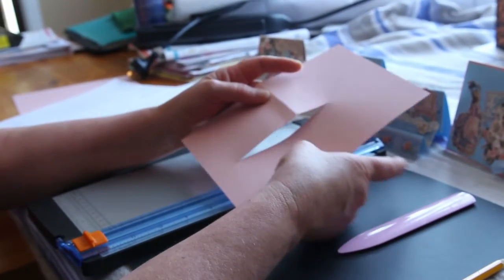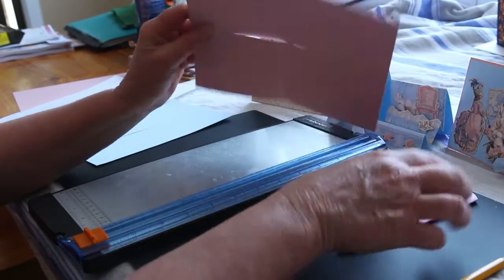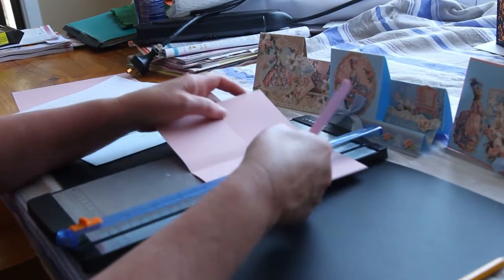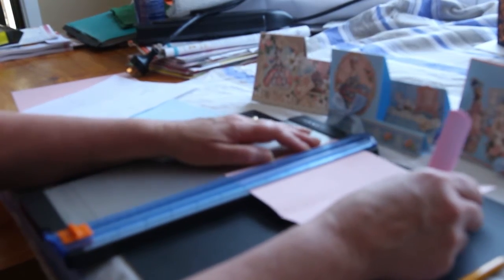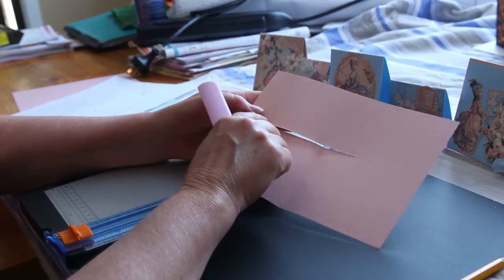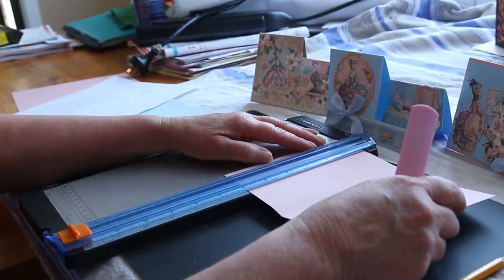From here on in, we're working on the seven centimeter side, so we're going to flip it over. It really doesn't matter which side you score because you can manipulate the folds the way you want them. From here on, we're only going to be scoring to our cut line. So we're going to do a score at three centimeters.